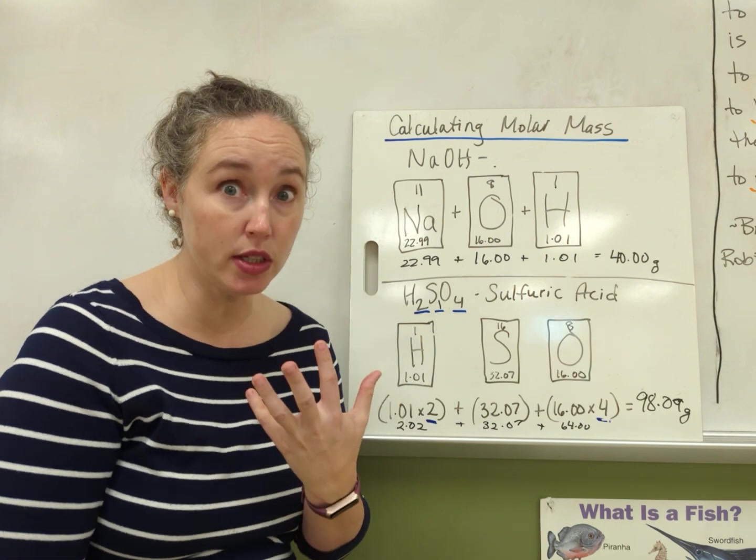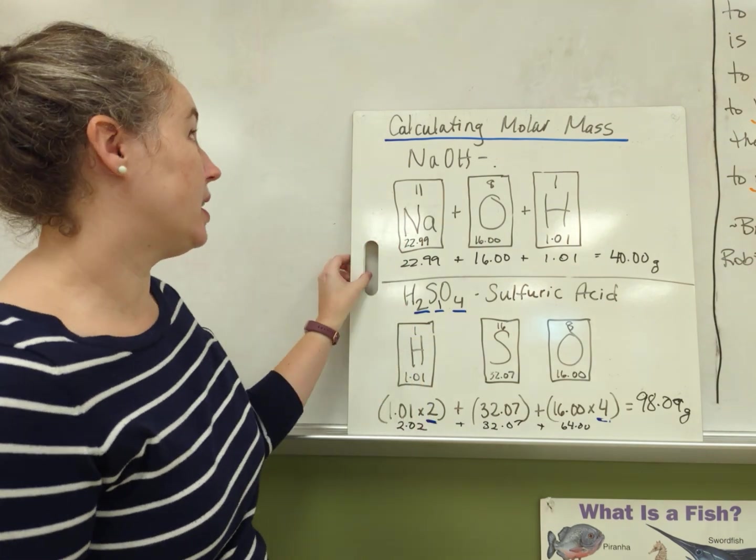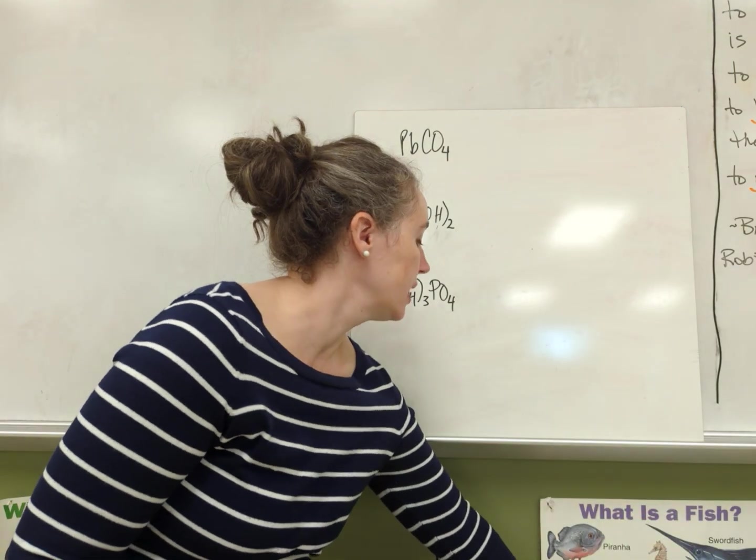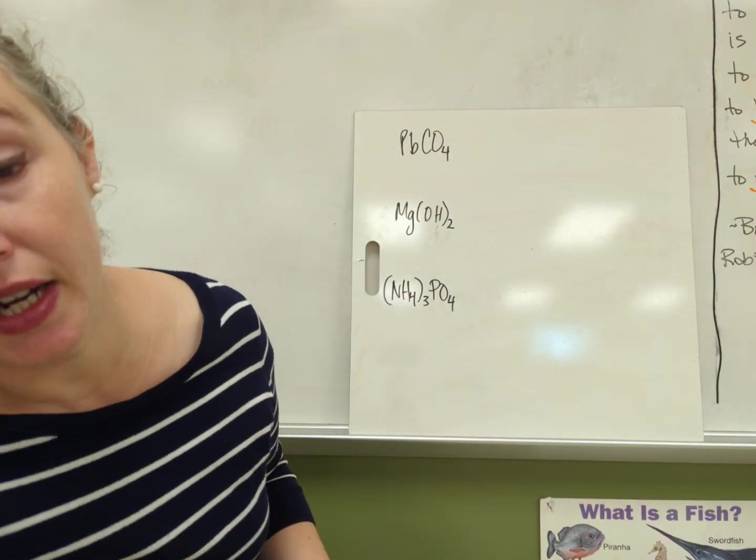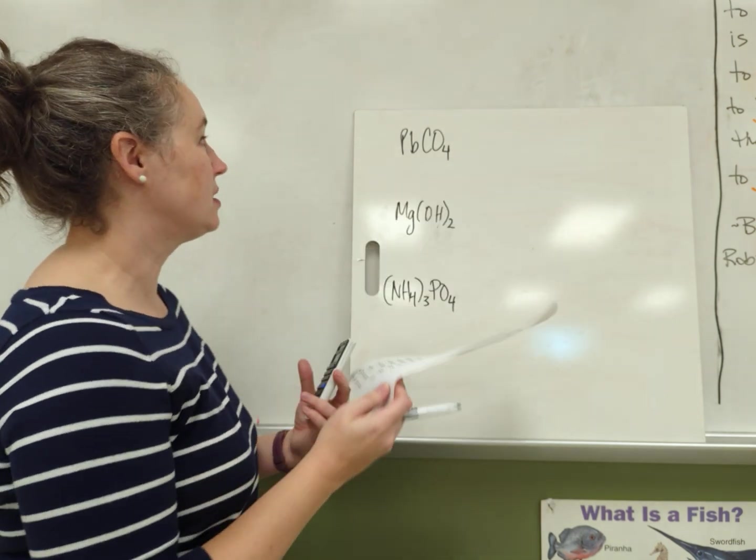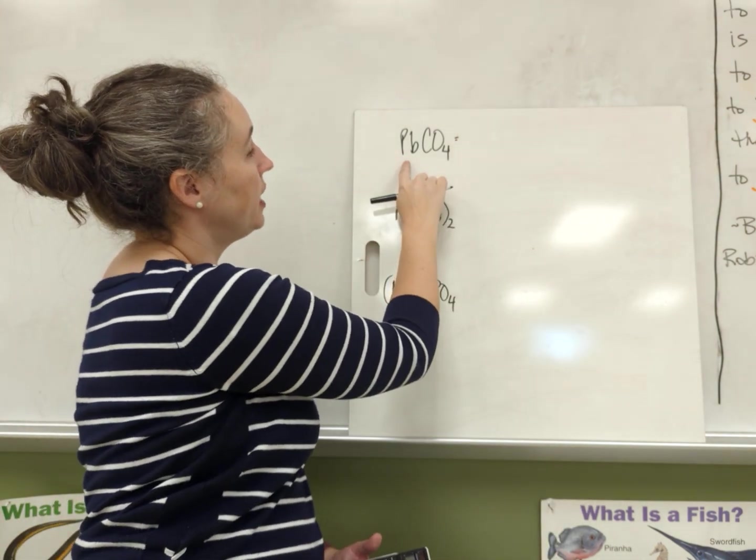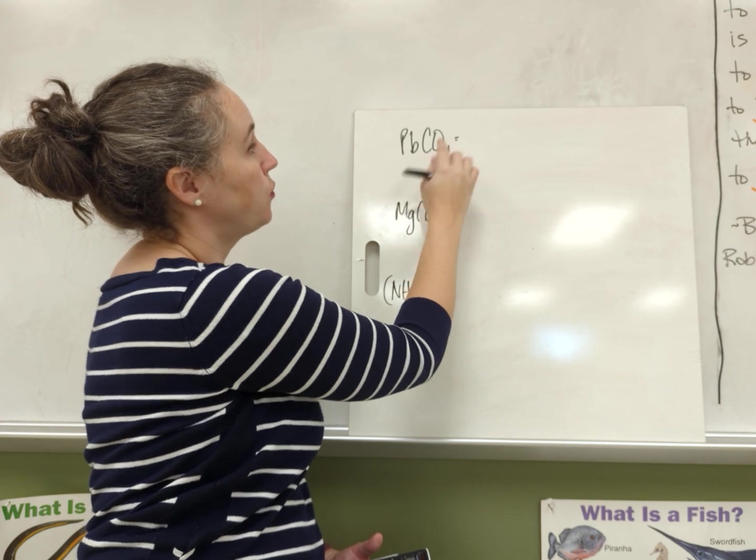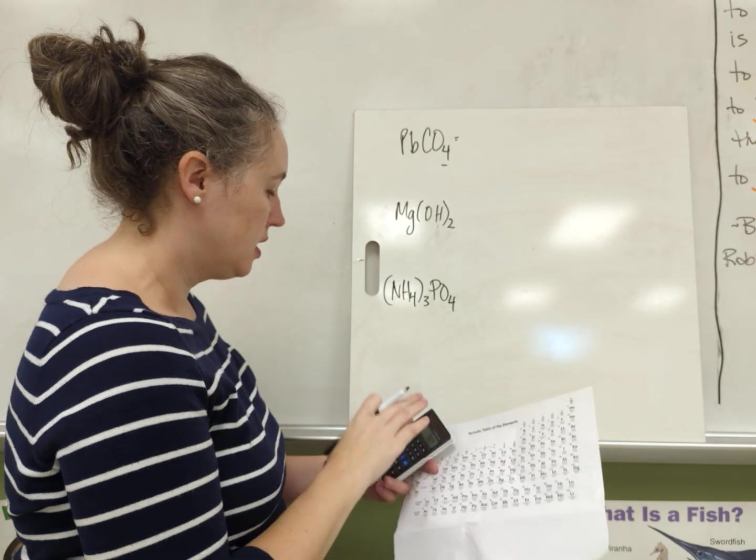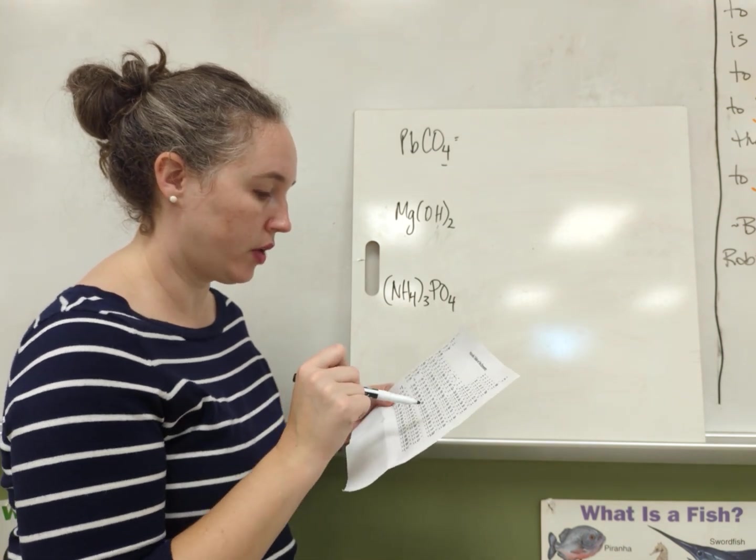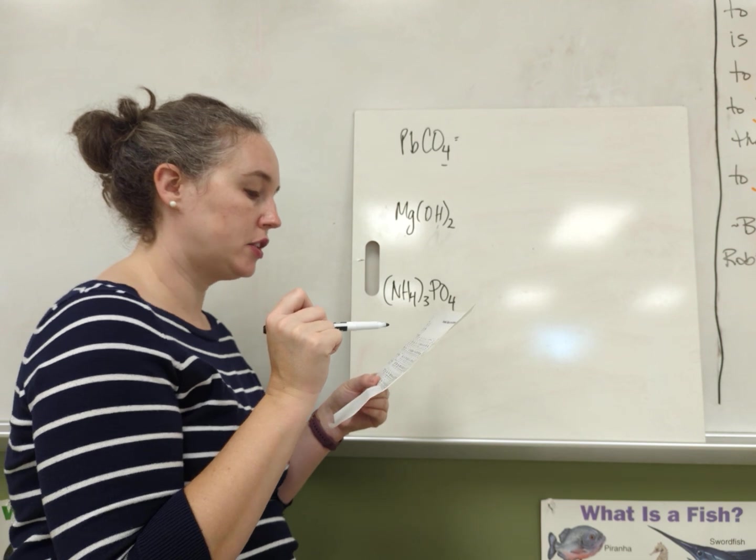Let's try a couple more examples because compounds can be written in lots of different ways. Alright, periodic table. Lead carbonate. So it looks like I have one lead, one carbon, and four oxygens.